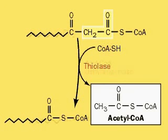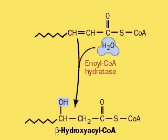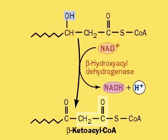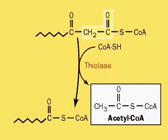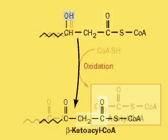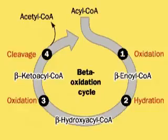Each time the cycle turns, going through its four steps of oxidation, hydration, oxidation, and cleavage, an additional two-carbon unit leaves the acyl-CoA as acetyl-CoA. Beta-oxidation continues until the fatty acid is fully processed.